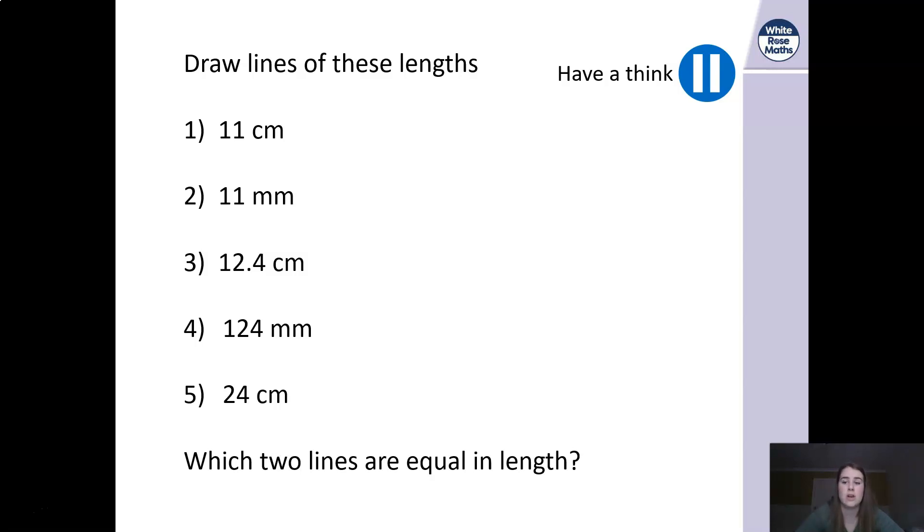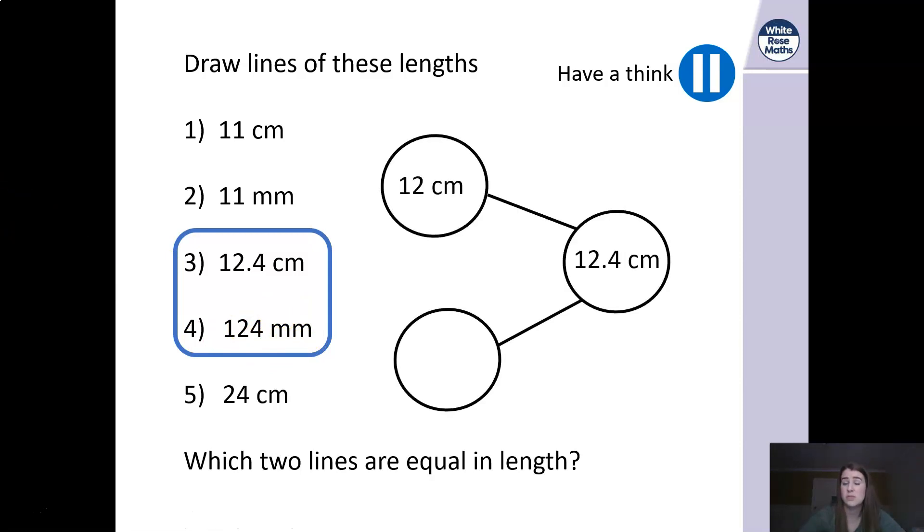Okay so well done if you've managed to have a go at drawing your measurements. Did anyone happen to spot any of the two that were the same in length? Yeah good, these two here. I know if I divide that by 10 because I know that there are 10 millimeters in a centimeter, I know that's going to give me 12.4. So 12.4 is the same as 12 centimeters and 0.4 which is four millimeters. So if I converted that, I've got 120 and 4.